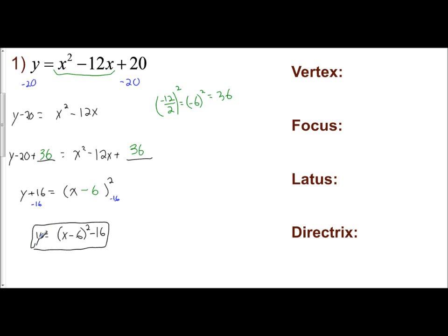Now I can use that to find the coordinate of the vertex, the focus, the length of the latus rectum, and the equation of the directrix. First, I need to identify my a, h, and k values. A is the leading coefficient, which here is 1. The formula for the vertex is represented by the coordinate h, k. Once you identify h is 6 and k is negative 16, you know your vertex is located at the coordinate 6, negative 16.